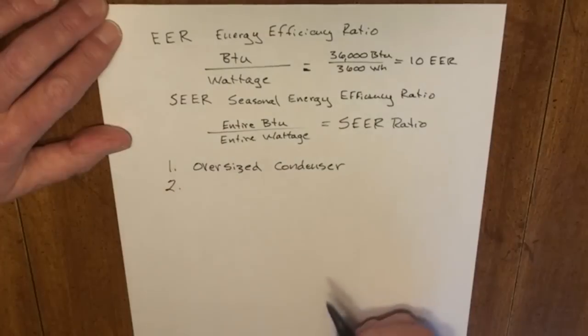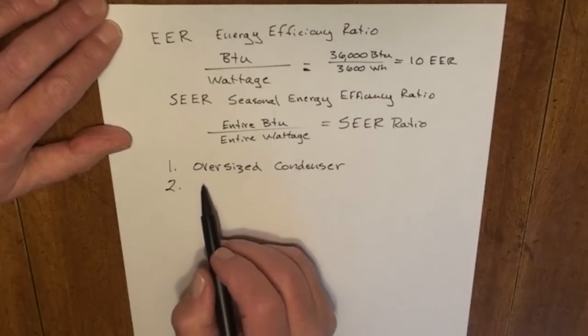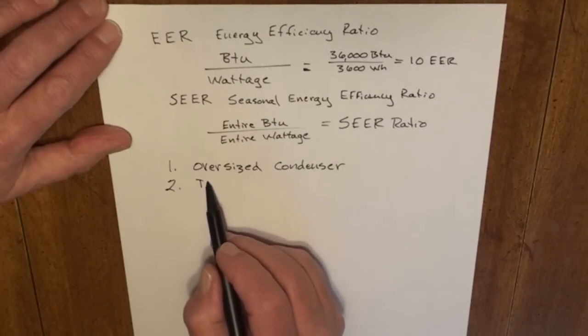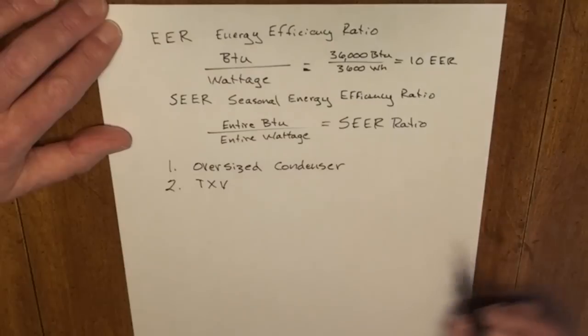The second most popular addition would be the thermostatic expansion valve. The TXV allows the refrigerant superheat in the evaporator to remain constant, even during load changes. Let's say the house is hot and we're doing a hot pull down on the house.